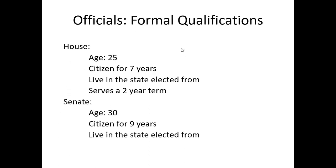The formal qualifications — found in Article I — to run for the House or Senate. For the House: must be 25 years old, a citizen of the U.S. for seven years, live in the state you're elected from, and serve a two-year term. For the Senate: age 30, citizen for nine years, live in the state you're elected from, and serve a six-year term.